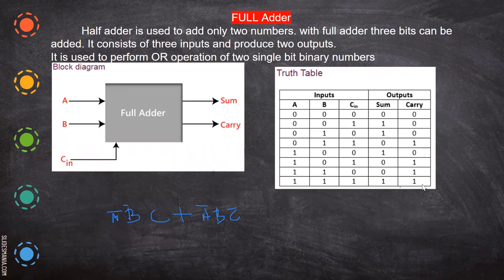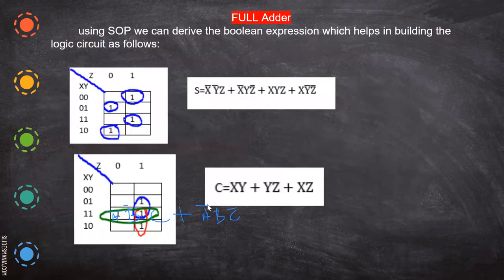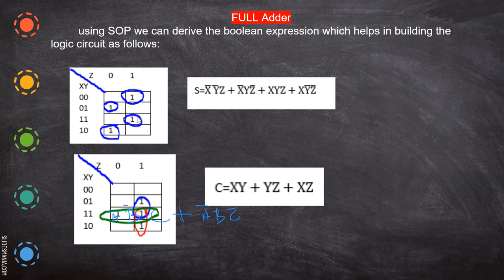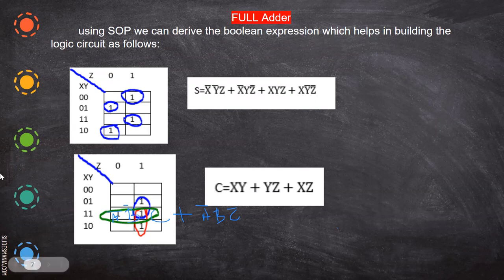So positions four and seven give us the sum equation. For the carry output, you check where it has ones: positions three, five, six, and seven have ones. There you place the ones and form the groups. Here we are not able to form simplifying groups, so you form the equation as is.